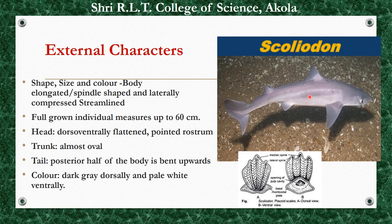The body is divided into three regions: head, trunk, and tail. The neck is not present — the head merges insensibly into the trunk without a neck. The head is dorso-ventrally flattened and produced in front into a pointed rostrum or snout. Here you can observe the position of the rostrum.